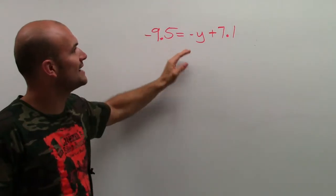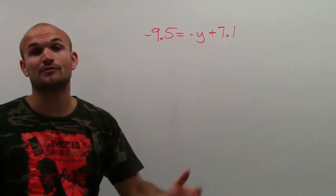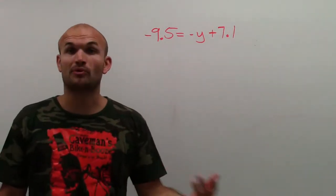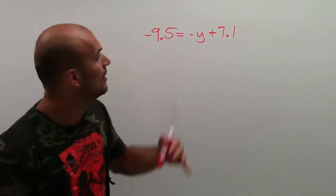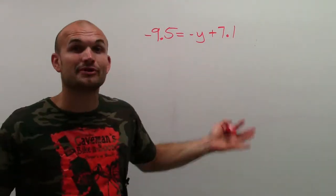So negative 9.5 equals negative y plus 7.1. For all of you that were so brilliant and smart and you did it in your head, you're like, oh man, I'm going to watch these videos. I can do this in my head.